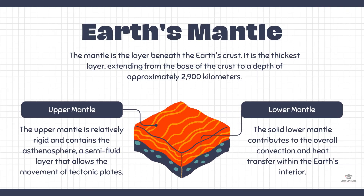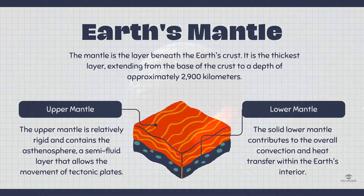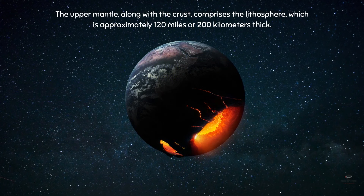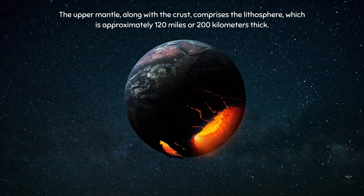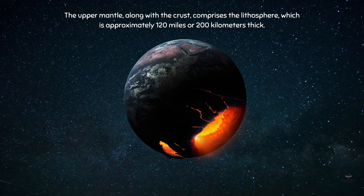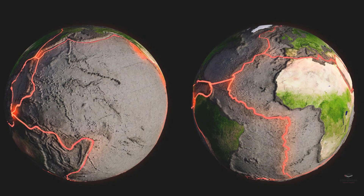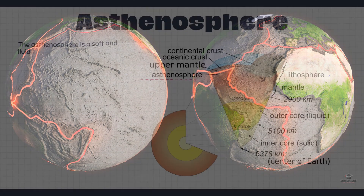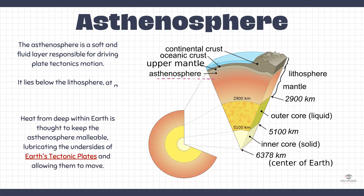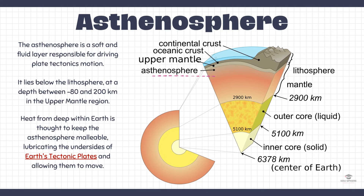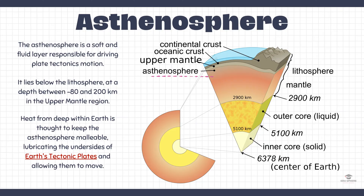The upper mantle, along with the crust, comprises what is called the lithosphere, which is approximately 120 miles or 200 kilometers thick. The lithosphere is broken into sections called tectonic plates. Directly below the lithosphere, there is a less fixed and warmer region of the upper mantle called the asthenosphere.